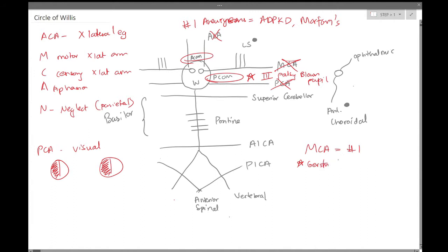And Gerstmann syndrome has agraphia, which is the inability to write, acalculia, which is the inability to calculate, and finger agnosia.